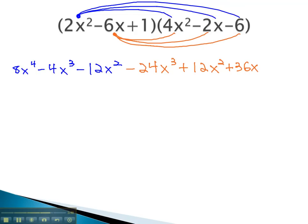Now, we will distribute the 1 through. 1 times 4x squared is 4x squared. 1 times negative 2x is negative 2x, and 1 times 6 is negative 6.